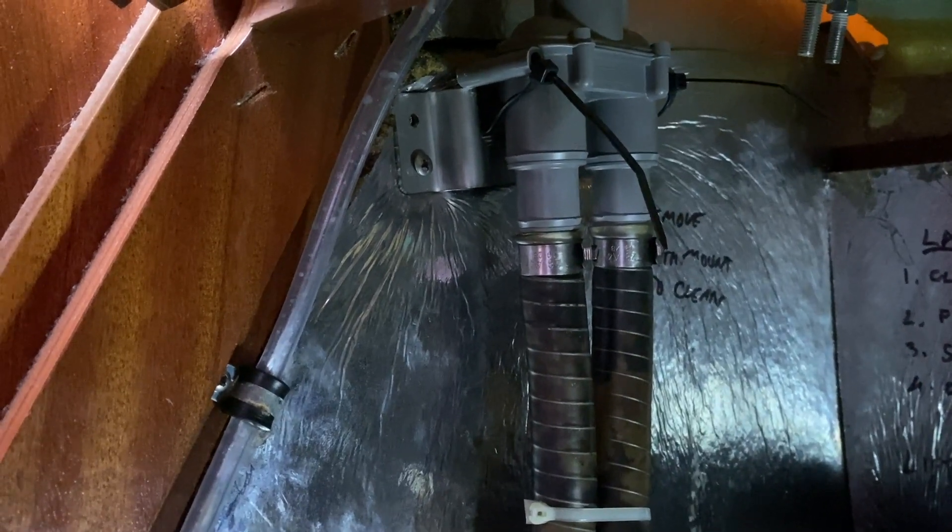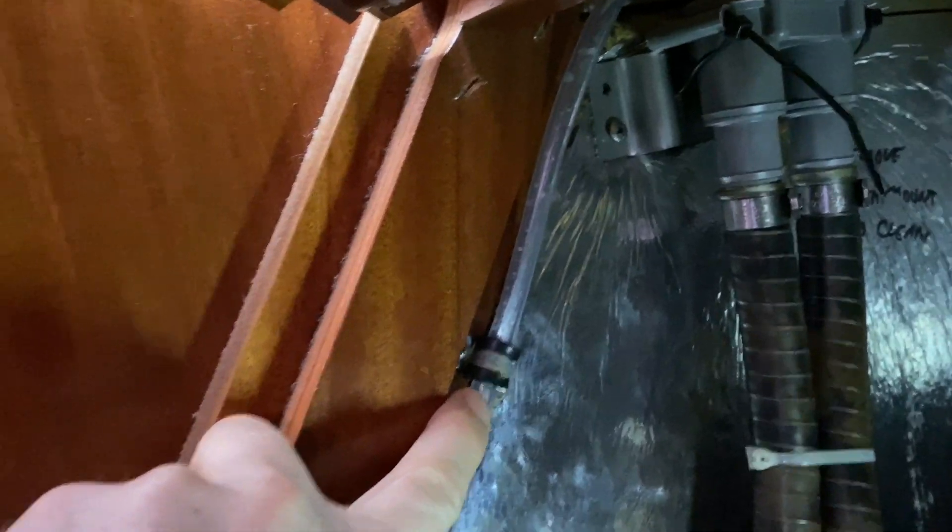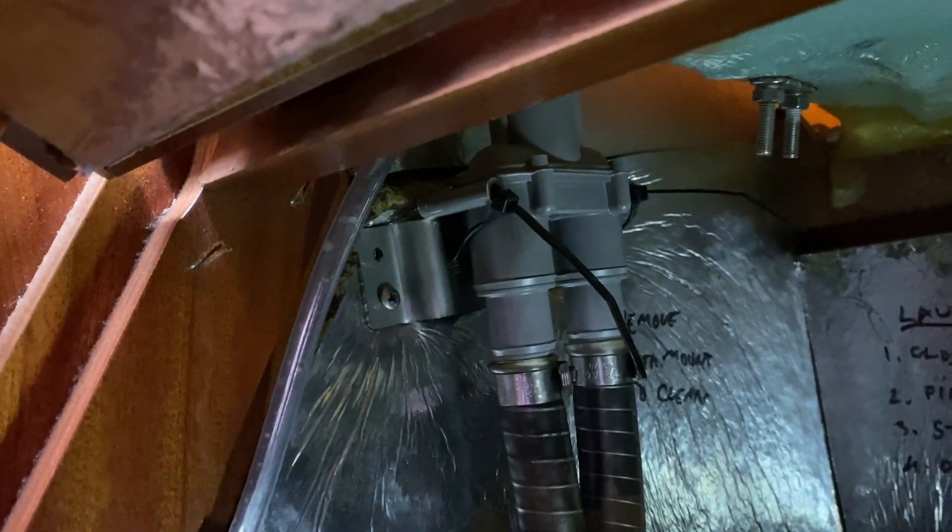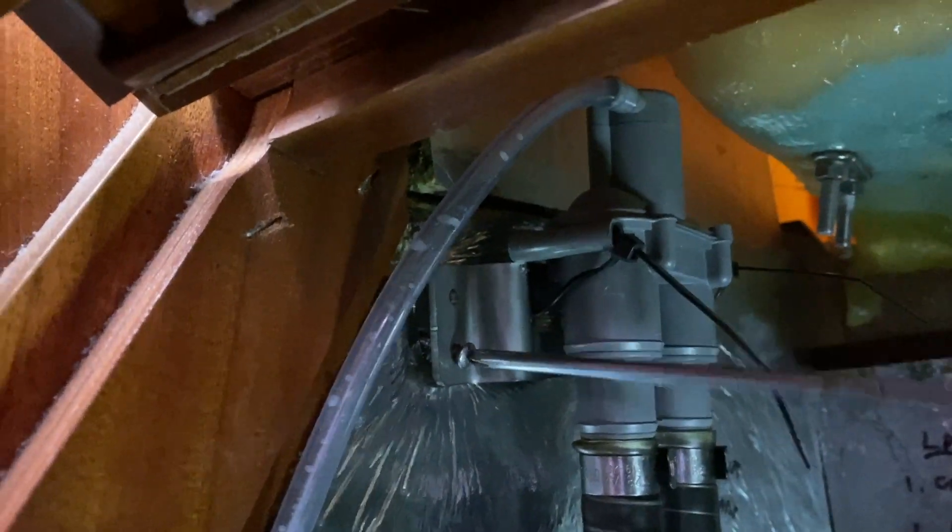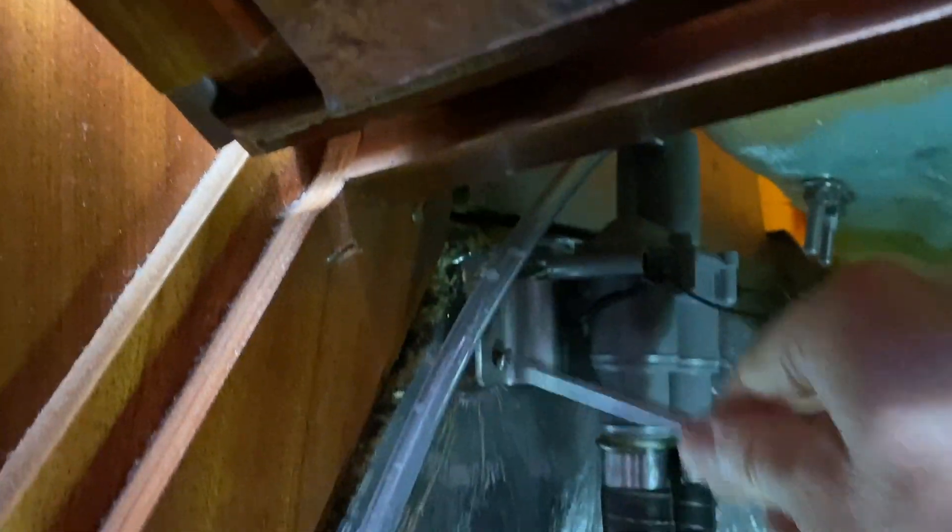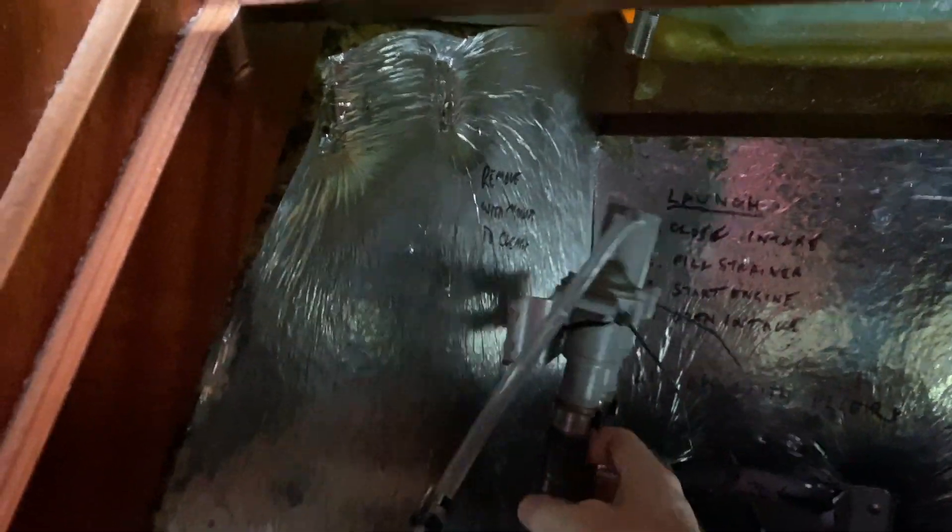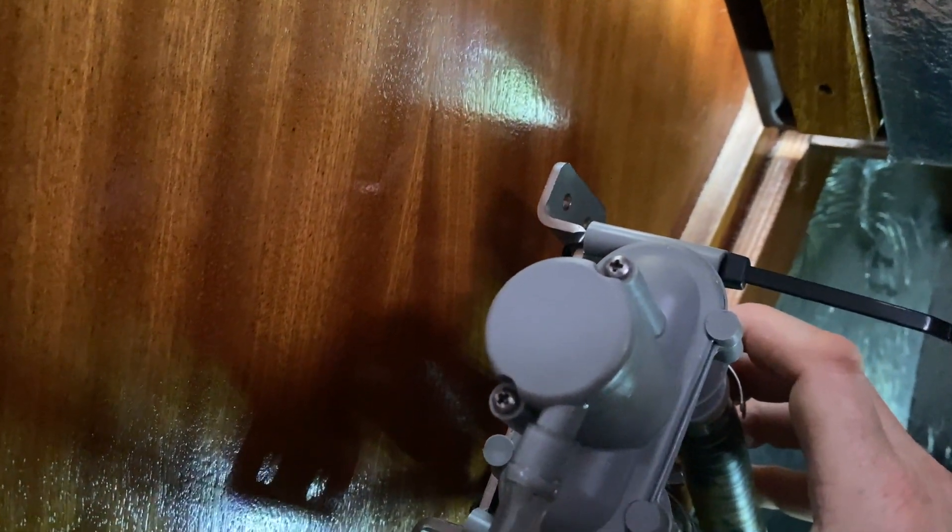There's one screw left to undo, but before I undo that I'll just undo this one here that's holding the pipe in place, because without that I can't remove the anti-siphon valve properly. And now we can just move the anti-siphon valve forward and the little screws on the top are now easily accessible.